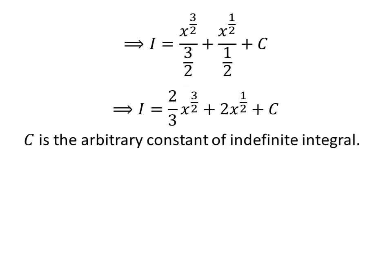Further simplification gives us I is equal to 2 upon 3 times x raised to the power of 3 upon 2, plus 2 times x raised to the power of half, plus capital C.